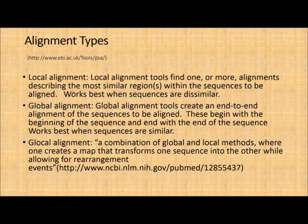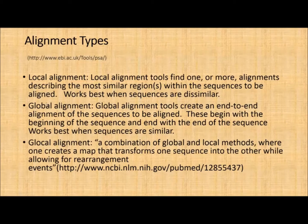Local alignments describe one or more alignments of the most similar regions when sequences are really dissimilar. You can't just put gaps to make things that really do not deserve to be aligned — you can't just force them to align. But there might be regions within the sequences which need to be aligned, and that is what is called a local alignment.